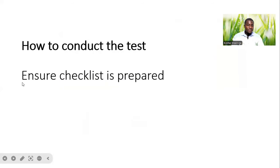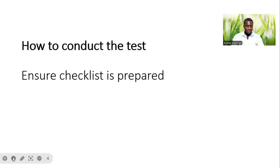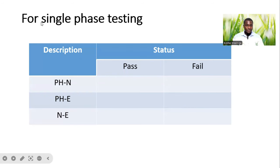How to conduct the test: first, we have to ensure that we have a checklist prepared. We also ensure that we pull all the different wires — the incoming wires or incoming cable, as well as the outgoing wires or outgoing cable — before carrying out the continuity test. For single-phase testing, the checklist has a description part and a status column with pass or fail. The description lists the tests: between phase and neutral, between phase and earth, and between neutral and earth. While we carry out the test, we record the pass or fail status on the checklist.